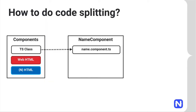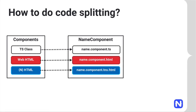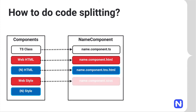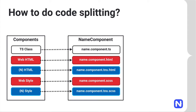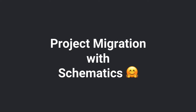For code sharing, if you have a component called name component, you'll have two separate HTML files. One will be named component.html and the other will be the same name with .tns added — you can also change this extension if needed. Similarly, for CSS you could have two separate files, where the NativeScript one will have .tns.sass or .tns.css.